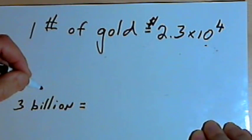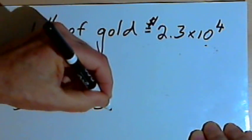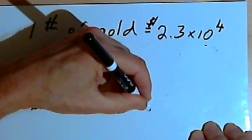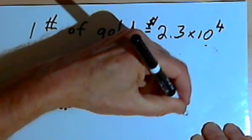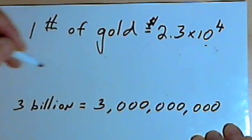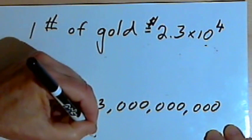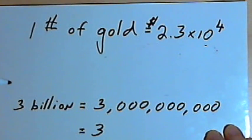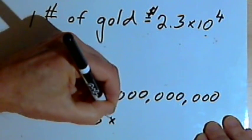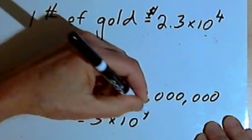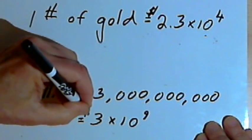I'm going to do that in two steps. First I'll write the 3 billion with all its zeros. So that's going to be 3 followed by 9 zeros. And then, of course, that means in scientific notation it would be 3 times 10 to the ninth. I'll put a dollar sign in front of that.